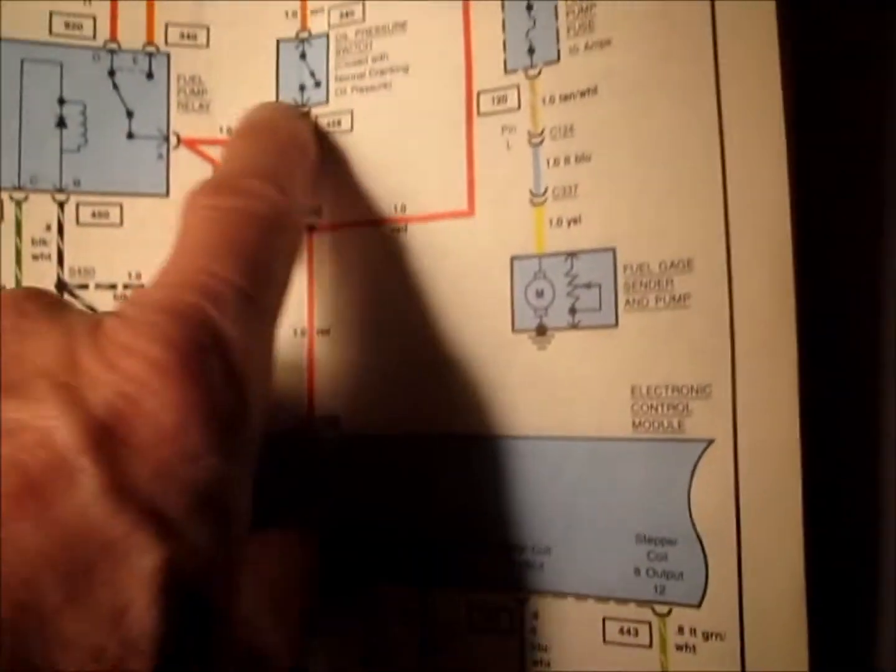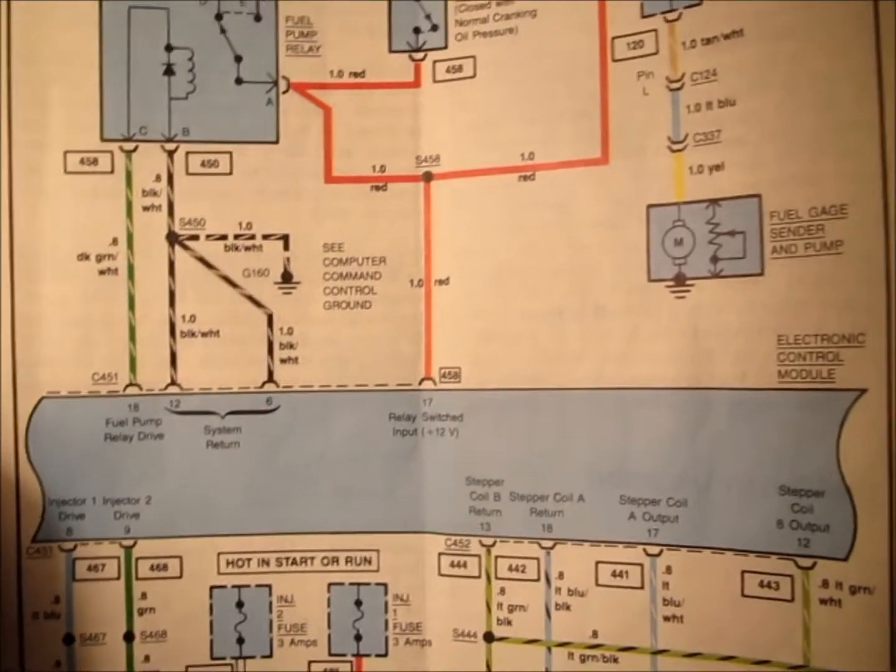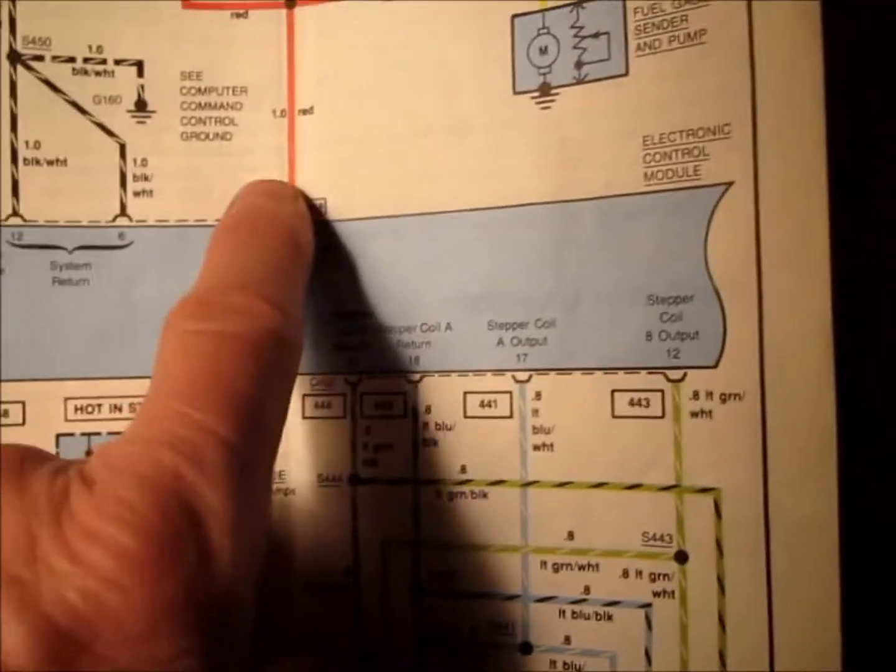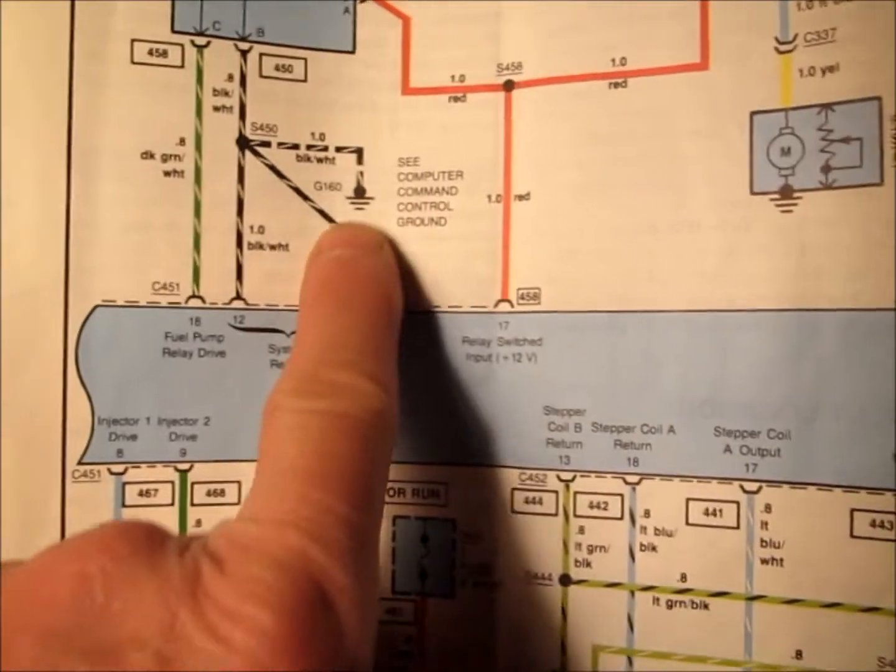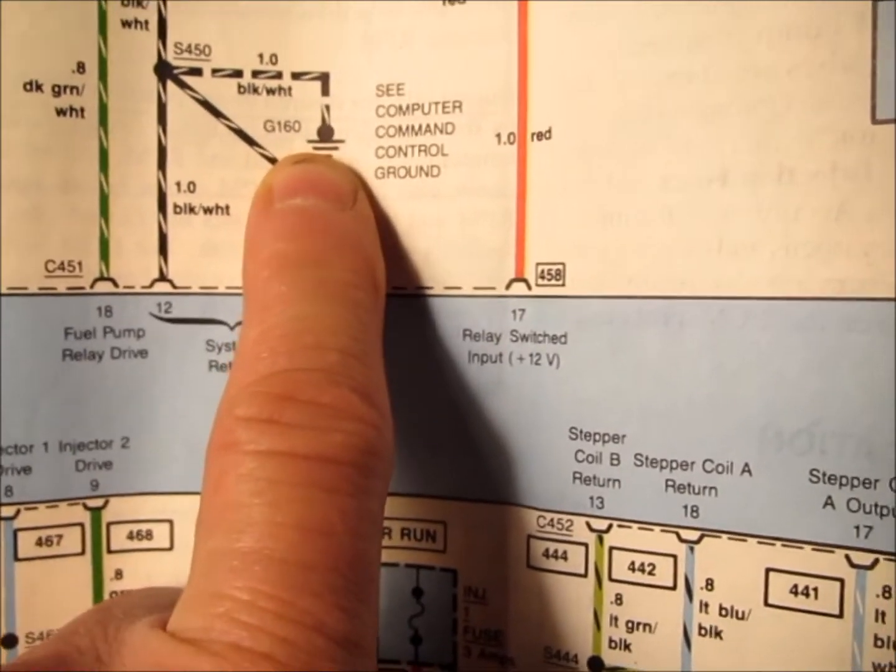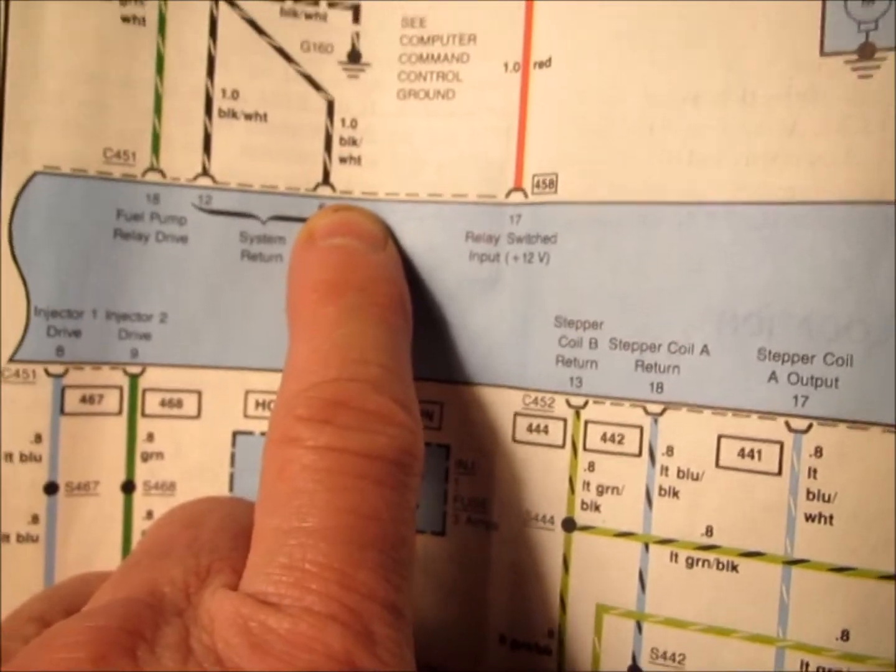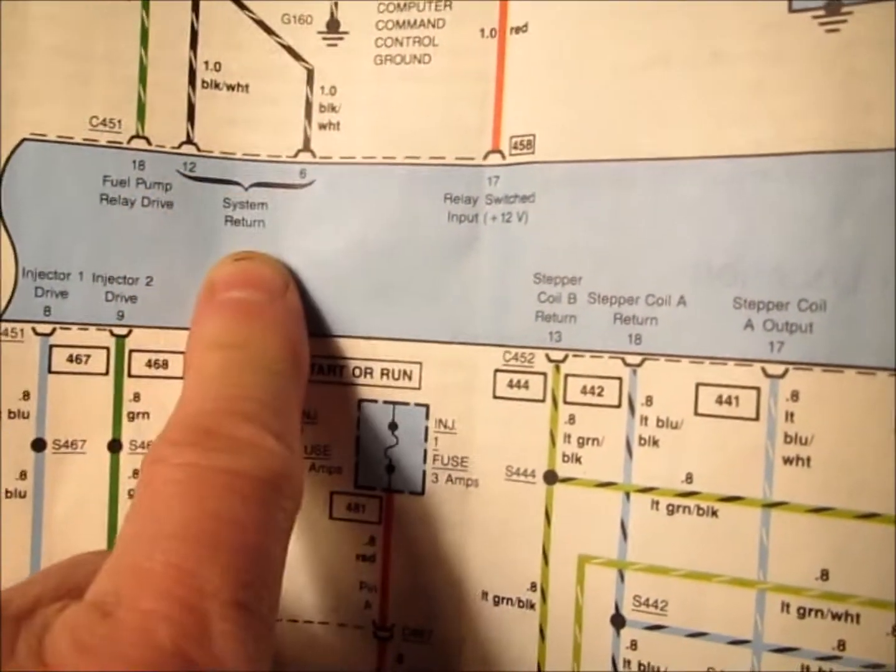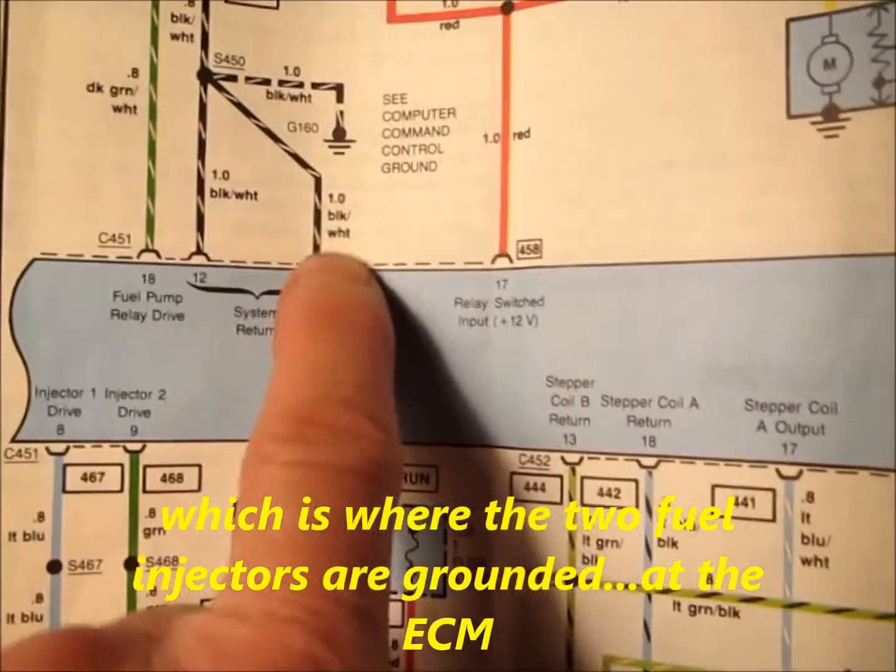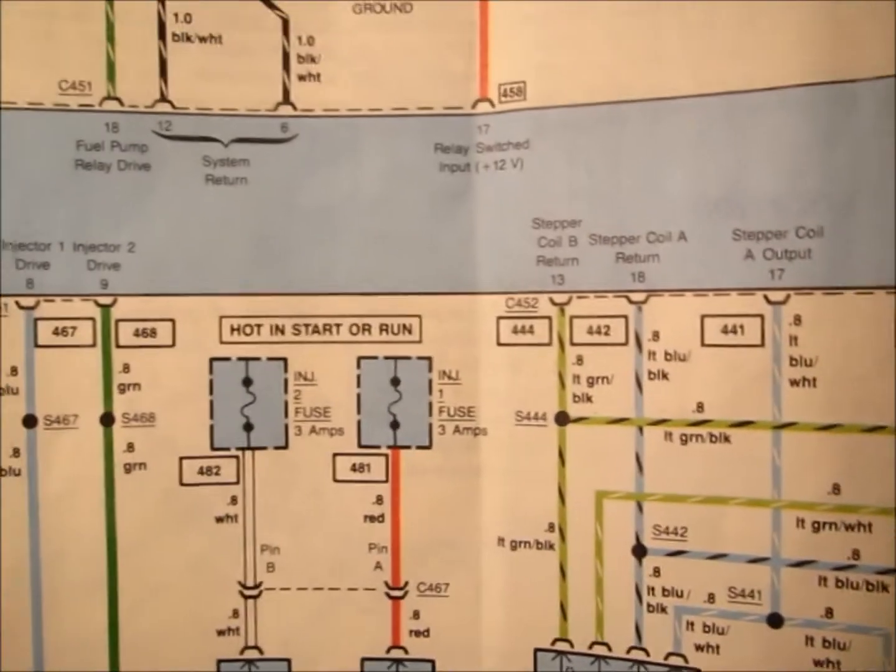If you're not getting fuel coming out of your injectors, then there's probably some sort of wiring glitch in one of these circuits. You can see you've got G160, which we went over. G160 is ground, there's a ground right behind the driver's side valve cover that grounds the fuel pump relay and it also grounds the electronic control module.